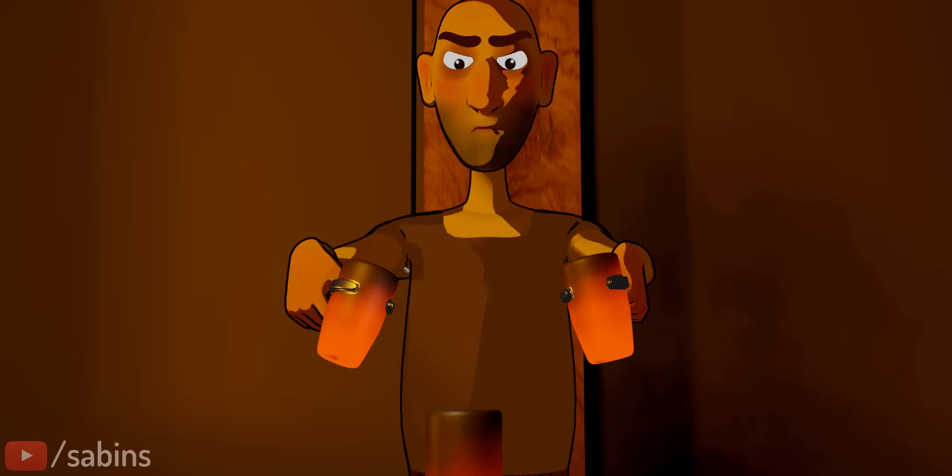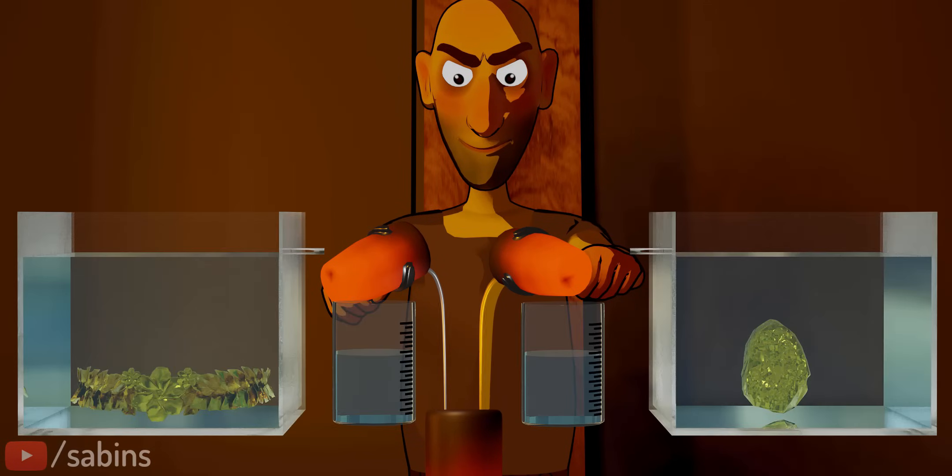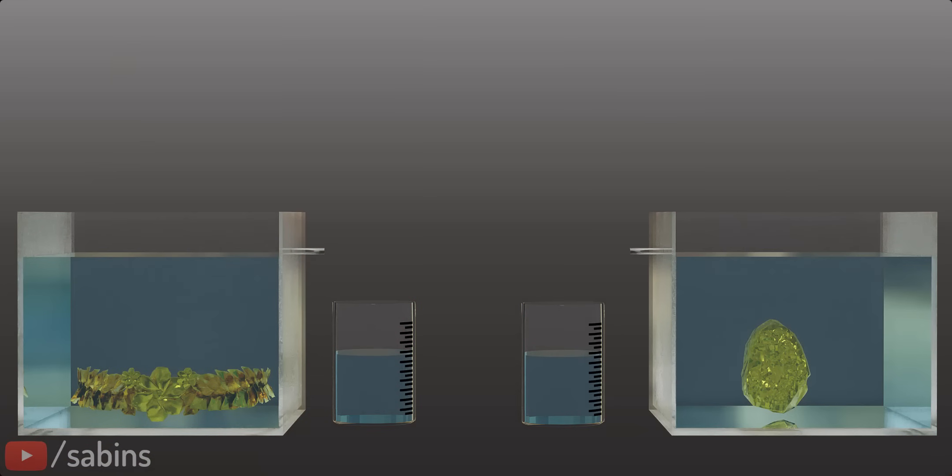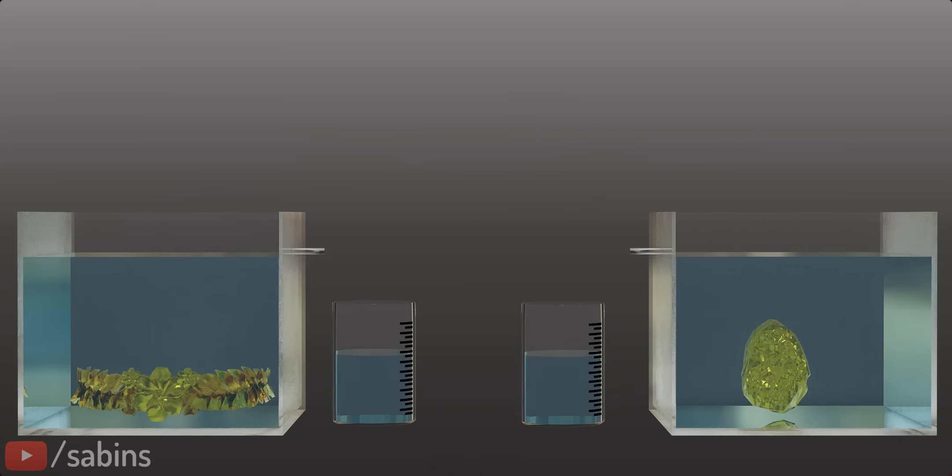However, assume that the goldsmith had mixed in 10% silver. The volume difference in water displaced would be too negligible to notice. Therefore, this is not a practical method. Moreover, this is a simple volume measurement method. There is no application of Archimedes' principle here.